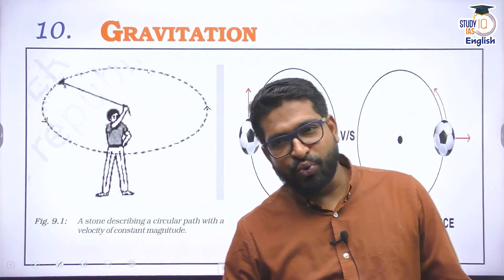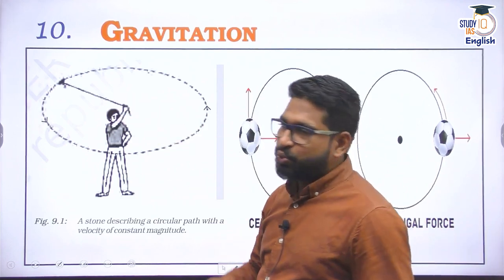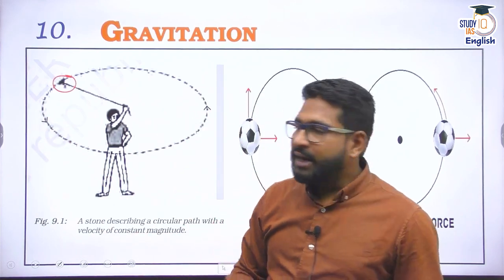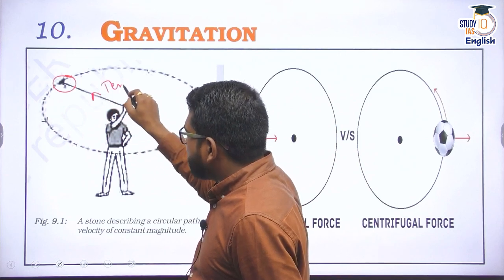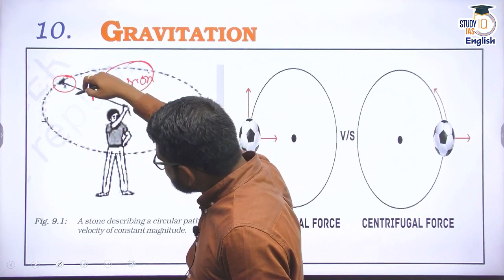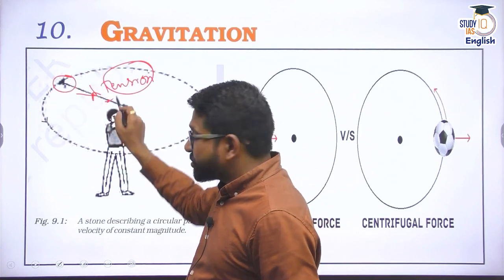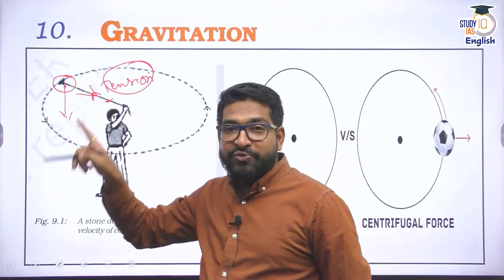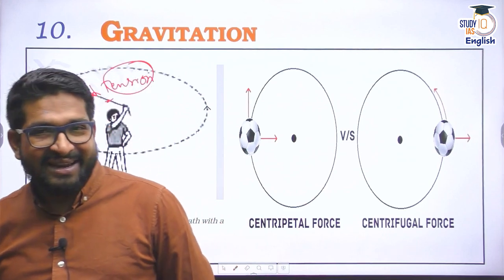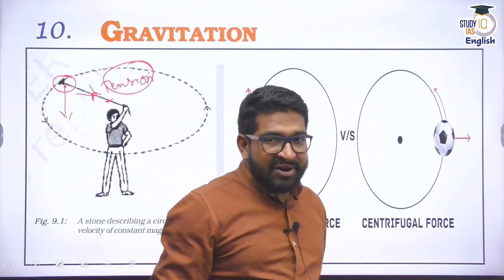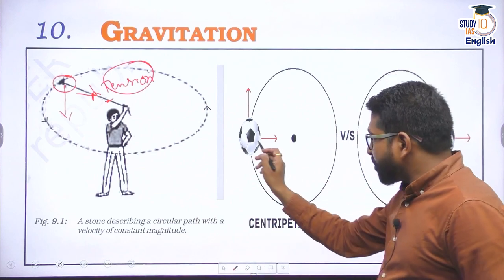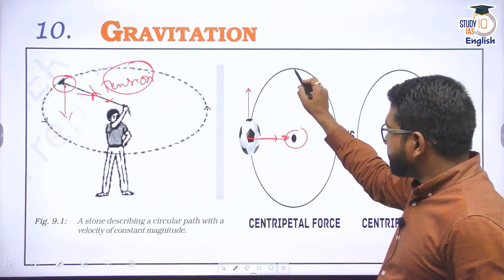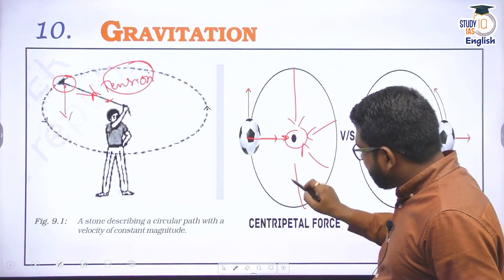A simple exercise can be conducted: take a string, attach a stone to it, and simply rotate it in uniform circular motion. You will see that the string will always be in tension, meaning some sort of force is acting continuously. As soon as the tension in the string goes down, the stone is going to fall — it is not going to follow the circular path. The gravitational force is a centripetal force which always acts towards the center.